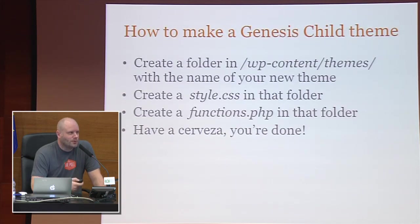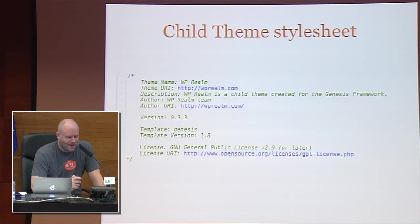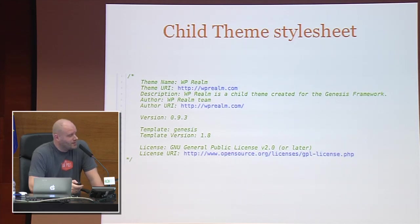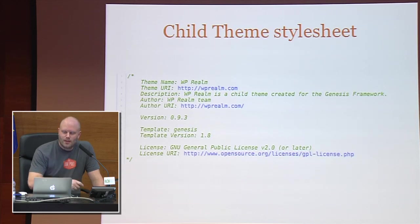So how do you make one? All you have to do is create a folder inside your themes directory, create a stylesheet, create a functions PHP file. In the case of Genesis, this is what it looks like — it's the one we use for WP Realm. As you can see, it states the normal things: theme name, URI, description, author. The important one is the template tag that says 'Genesis' — that's telling the theme to look at Genesis for all the functionality, and the rest is done in the WP Realm child theme.